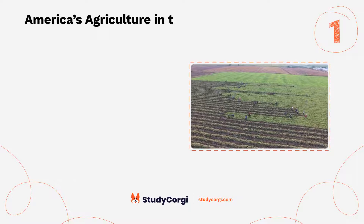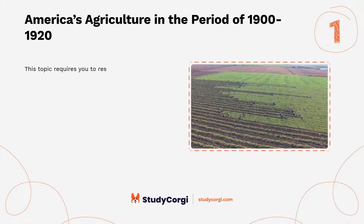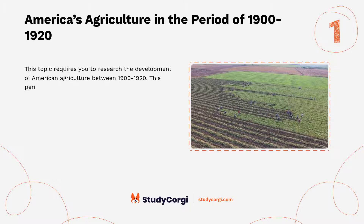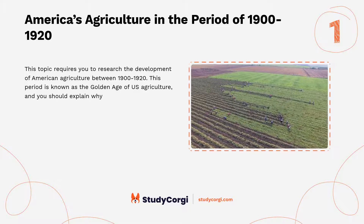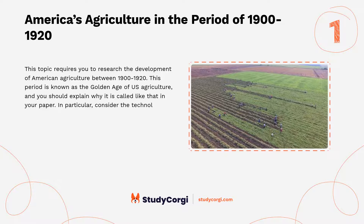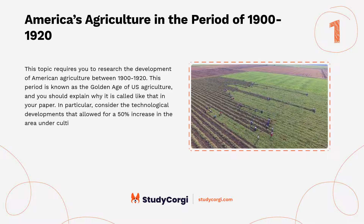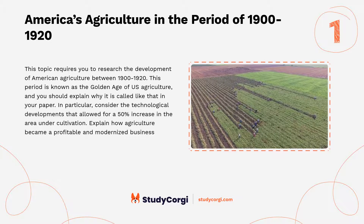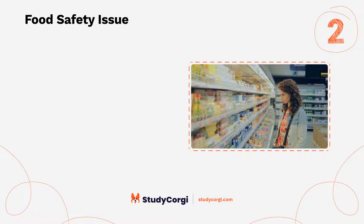America's agriculture in the period of 1900 to 1920. This topic requires you to research the development of American agriculture between 1900 and 1920. This period is known as the golden age of U.S. agriculture, and you should explain why it is called that in your paper. In particular, consider the technological developments that allowed for a 50 percent increase in the area under cultivation, and explain how agriculture became a profitable and modernized business.